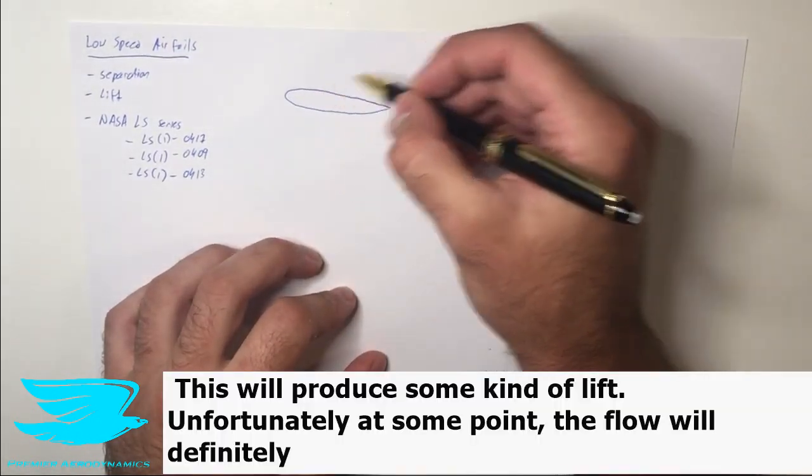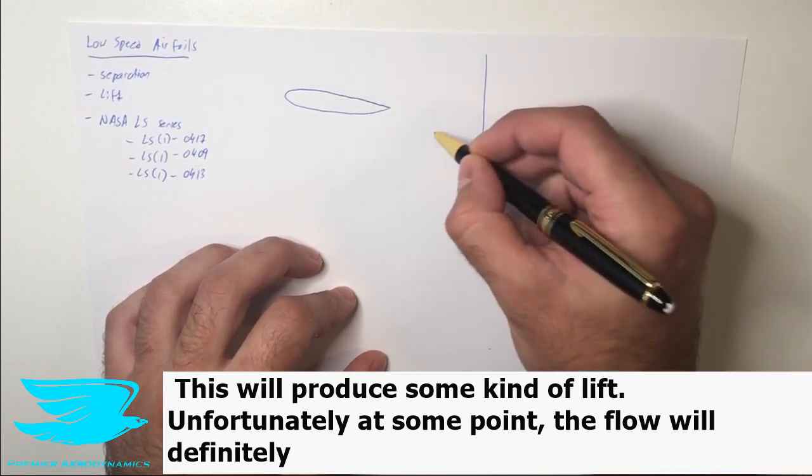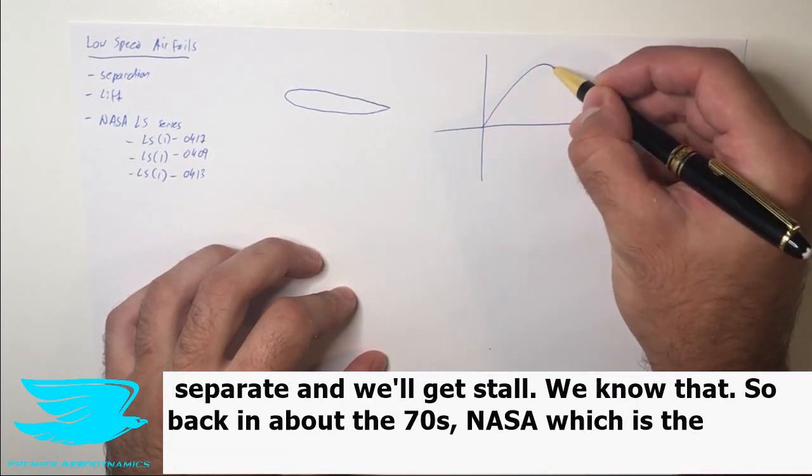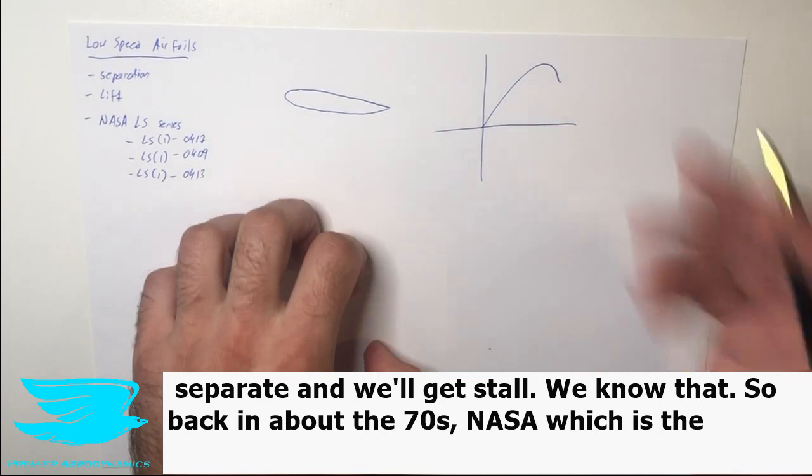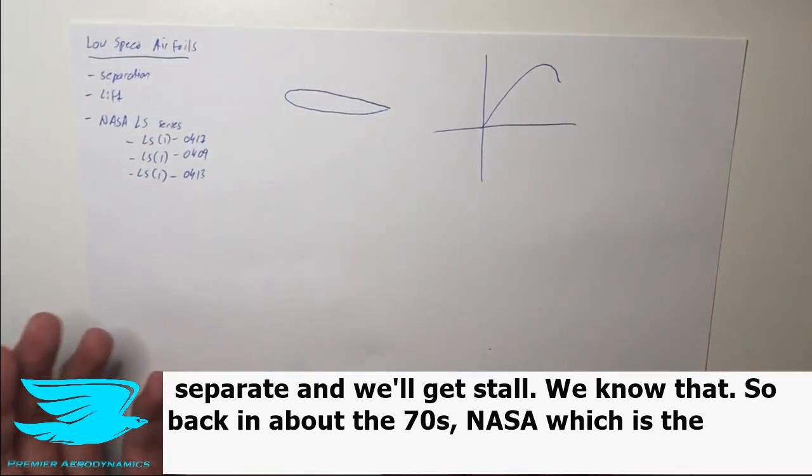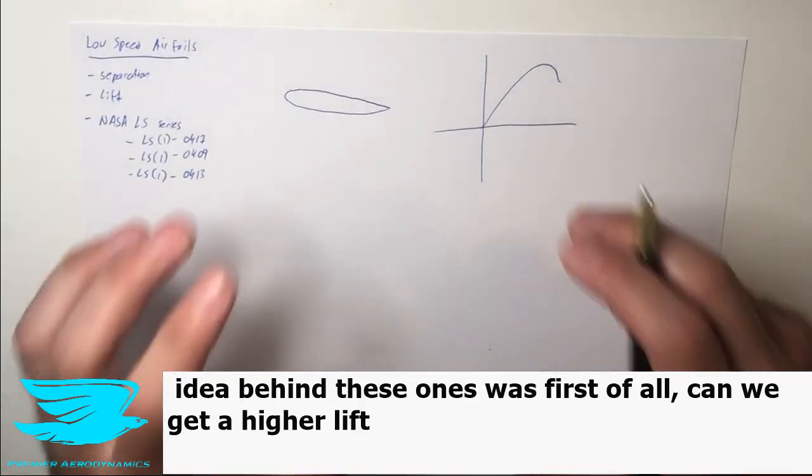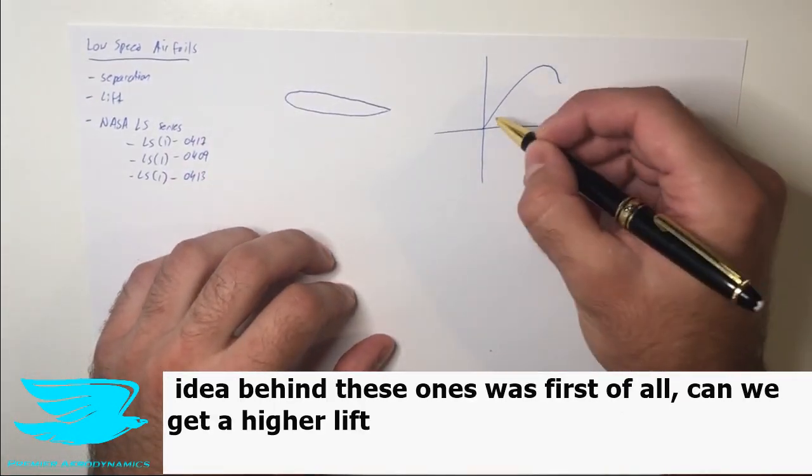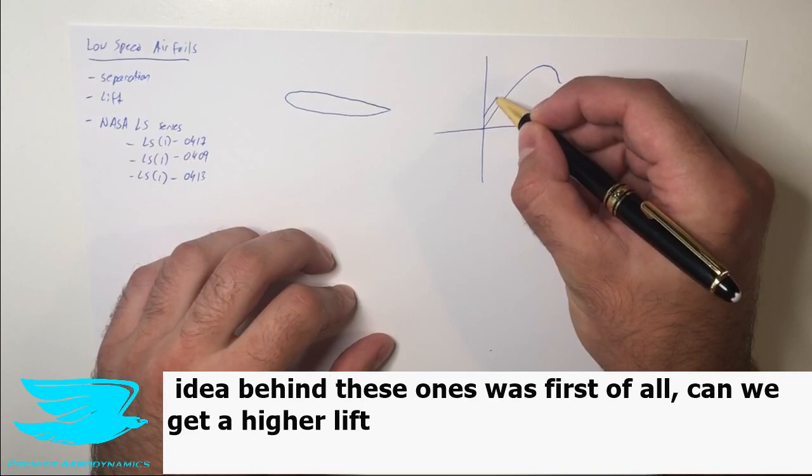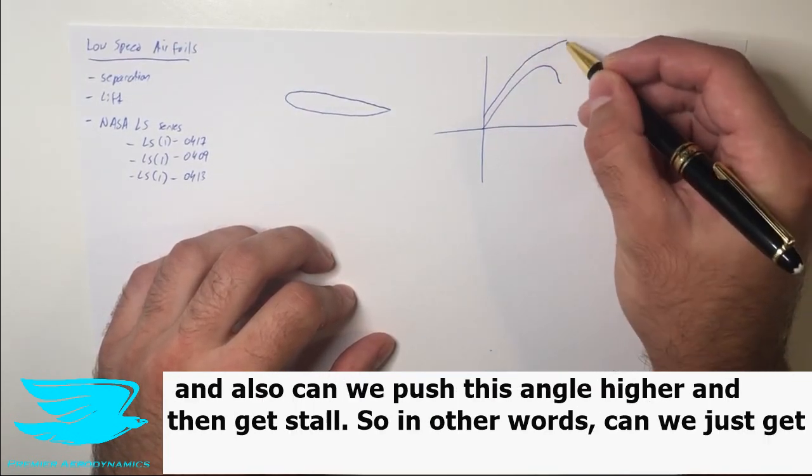This will produce some kind of lift, but unfortunately at some point the flow will definitely separate and we'll get stall. We know that. So back in about the 70s, NASA, which is the successor to the NACA airfoils, designed some new airfoils called low speed ones. The idea behind these ones was first of all, can we get a higher lift just generally speaking, and also can we push this angle higher and then get stall?